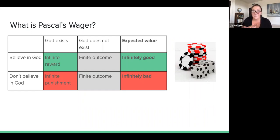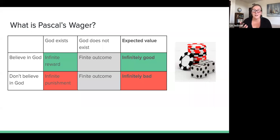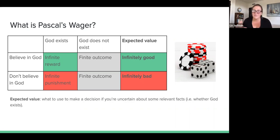Basically, there are two ways the world could be: God exists or God does not exist. And there are two actions you can take: believe in God or not believe in God. If God exists and you believe, you get something infinitely good — heaven. If God exists and you don't believe, you get something potentially infinitely bad — hell. If God does not exist, whether you believe or not, the outcome is finite. Since we're not 100% certain either way, we can think about the expected value of each action.